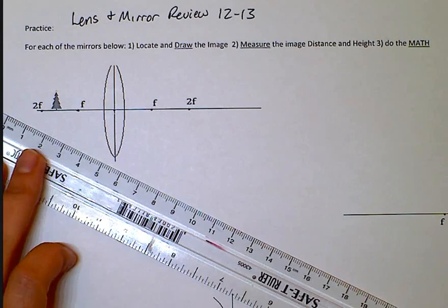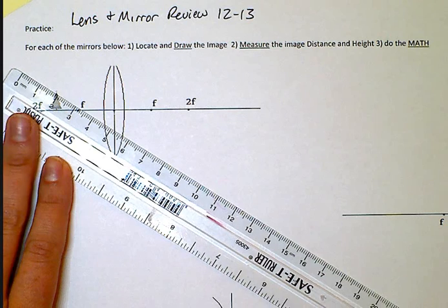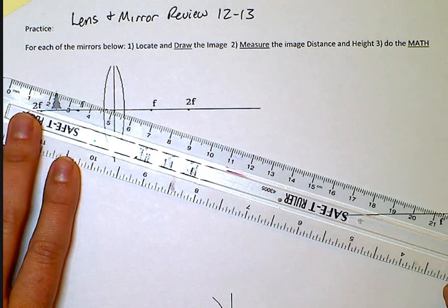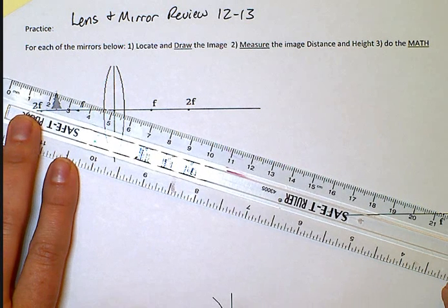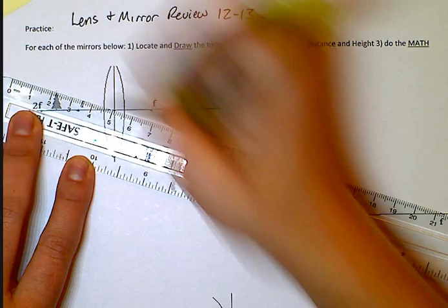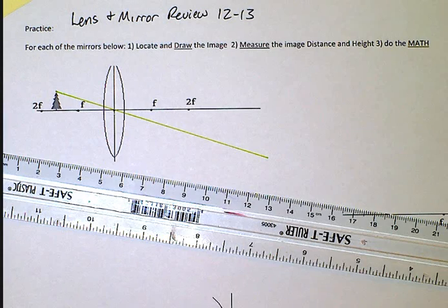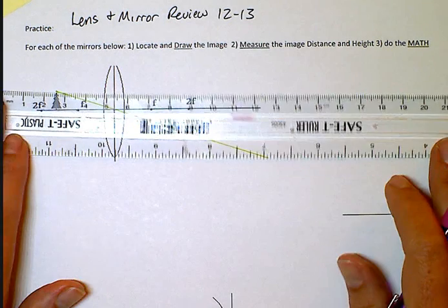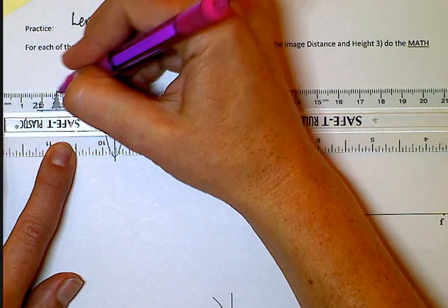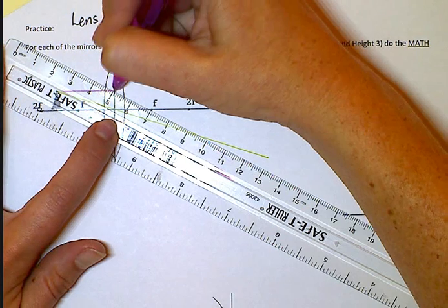So I'll draw first. I've got the line that goes from the top of the object through the center. I'm going to use the star at the top of my object. The pink line goes parallel, and then it will bend in because it's converging, but it's not random. It bends so it passes through the focal point.